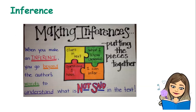Let's review making inferences. When we make an inference, we go beyond the author's words to understand what is not said in the text. We use the clues in the text with what we know — that's our schema, the knowledge that we already have. We think about the questions that we have, and then we can infer. It's just putting all of those pieces together to make an inference.